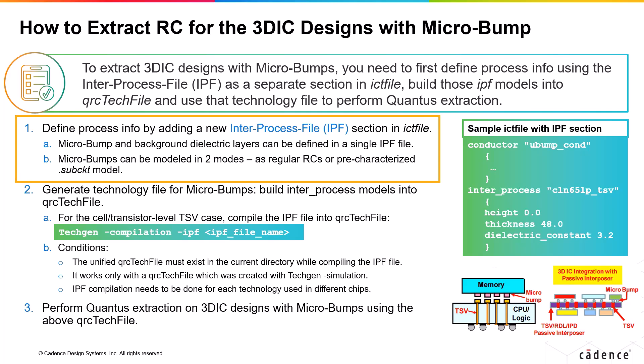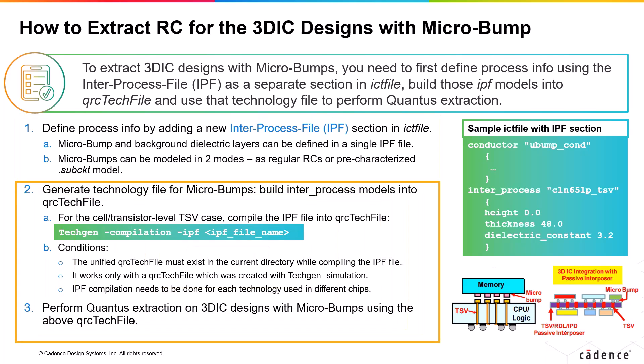Once the IPF file is created, how do you incorporate it into the QRC tech file creation? To extract the RC for micro bumps, you need to build the inter process models into the QRC tech file. You do this by inputting the IPF file during the tech gen compilation step using the command: tech_gen compilation followed by -ipf followed by the IPF file name. The unified QRC tech file must exist in the current directory while compiling the IPF file.